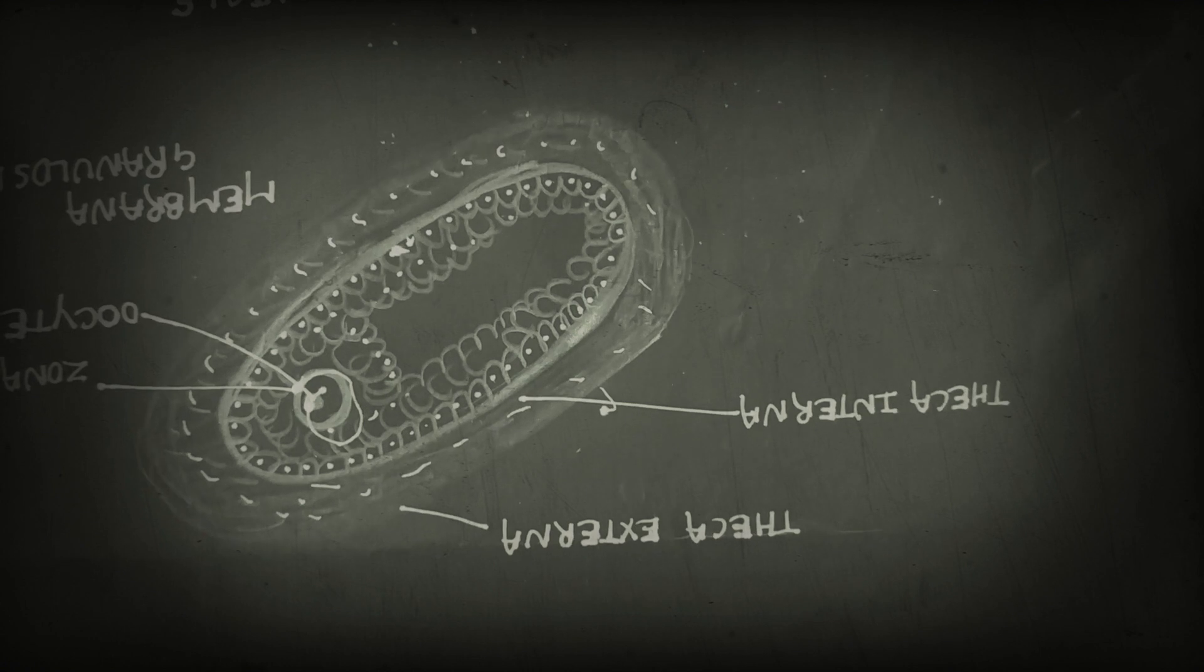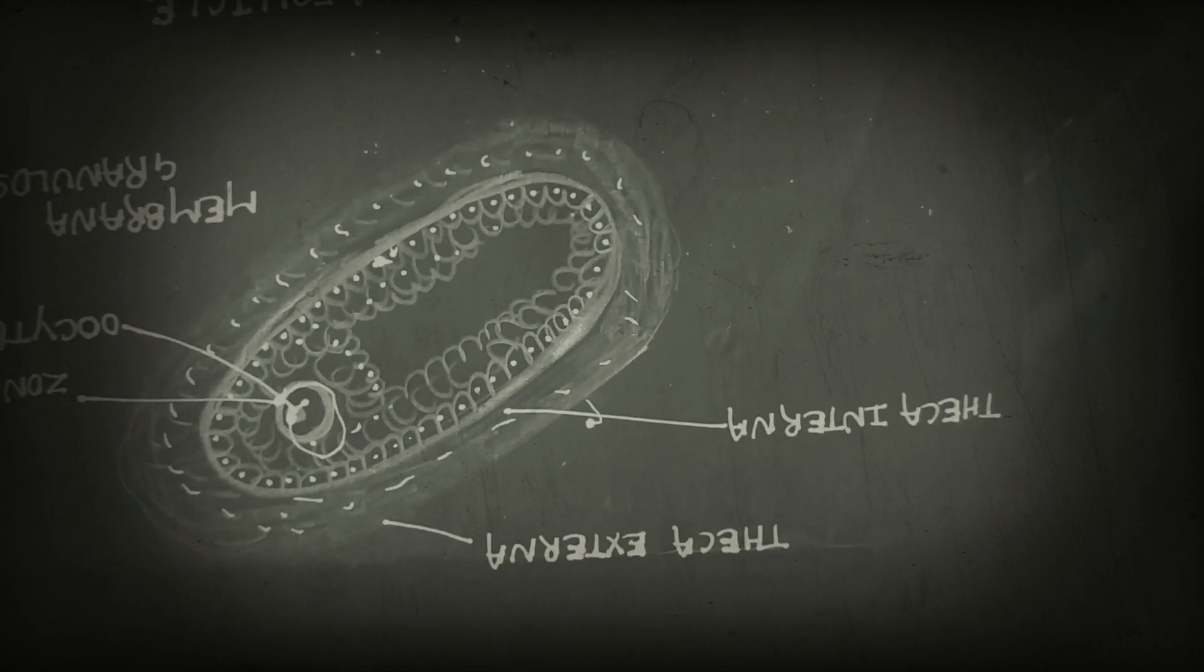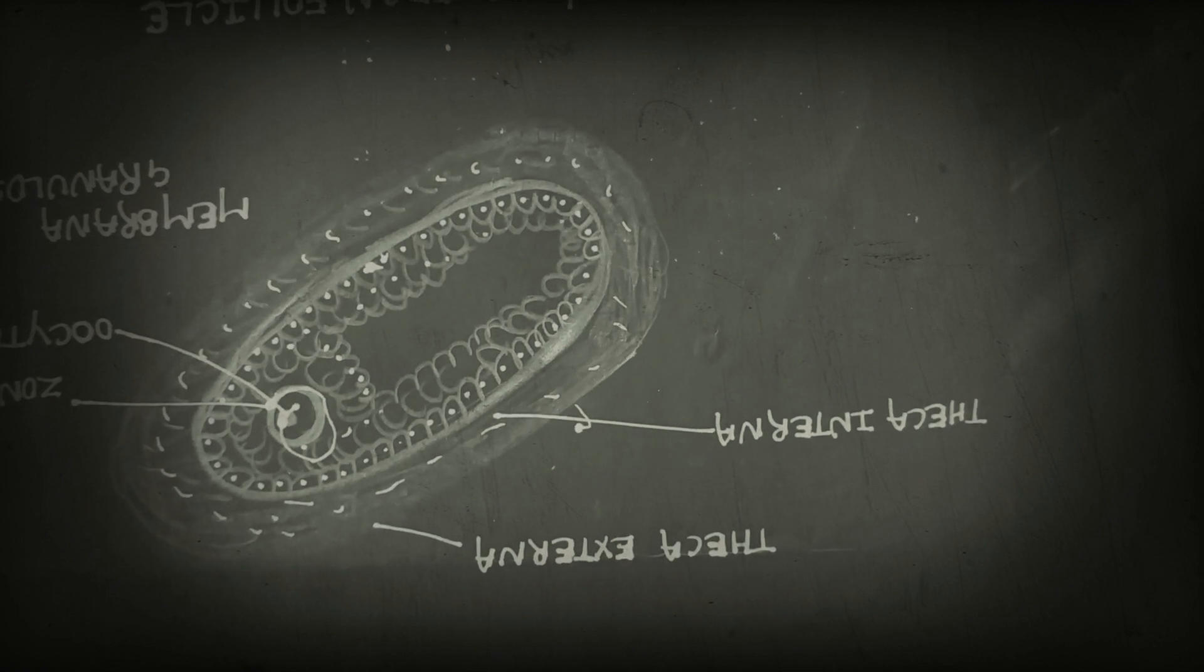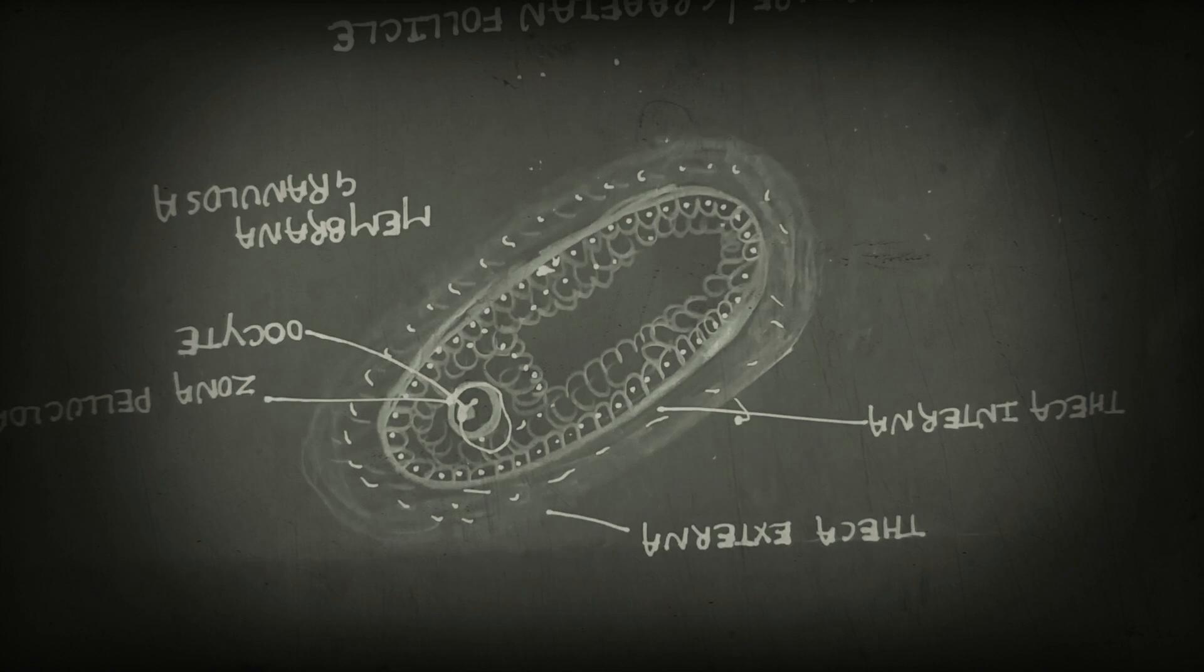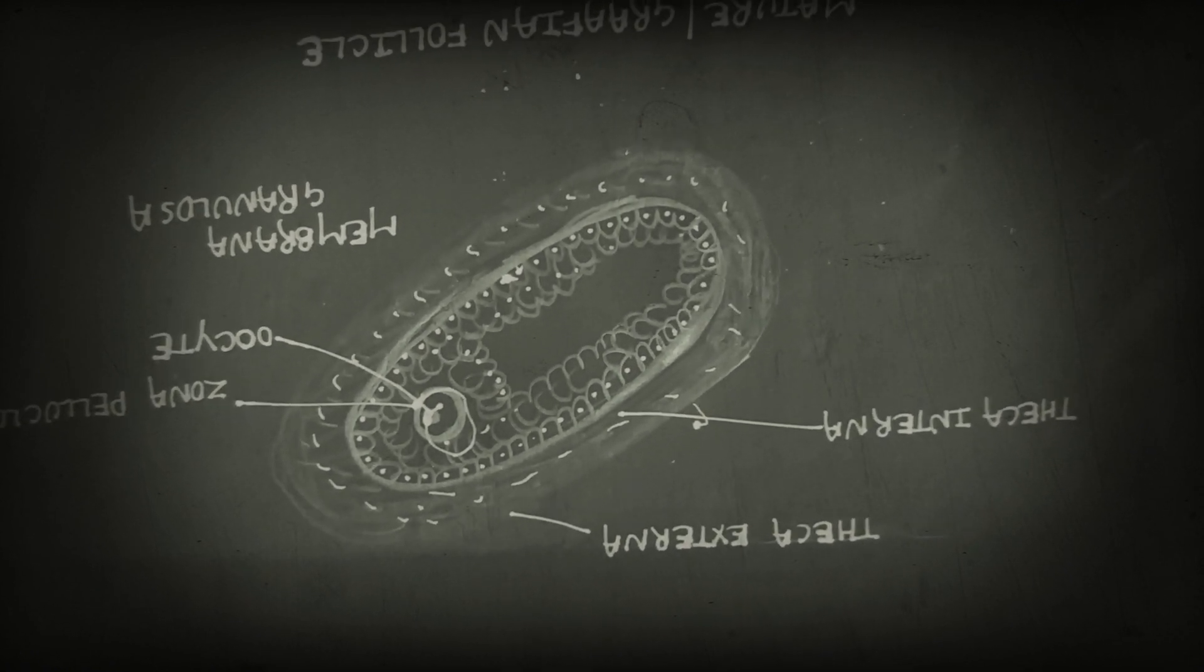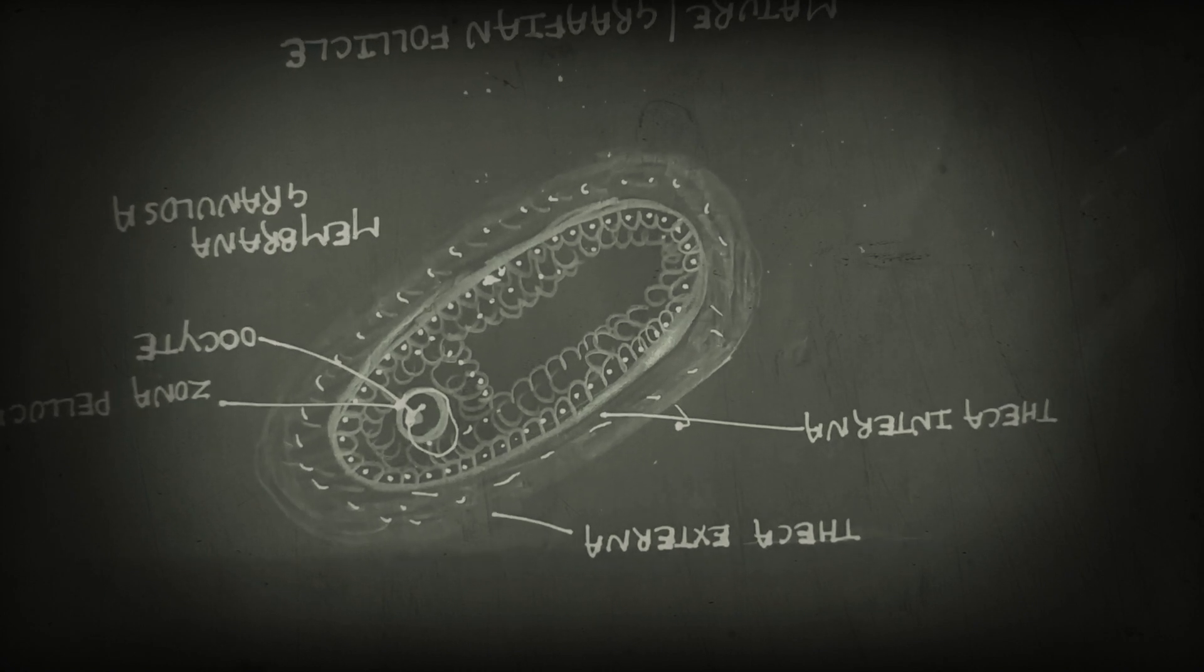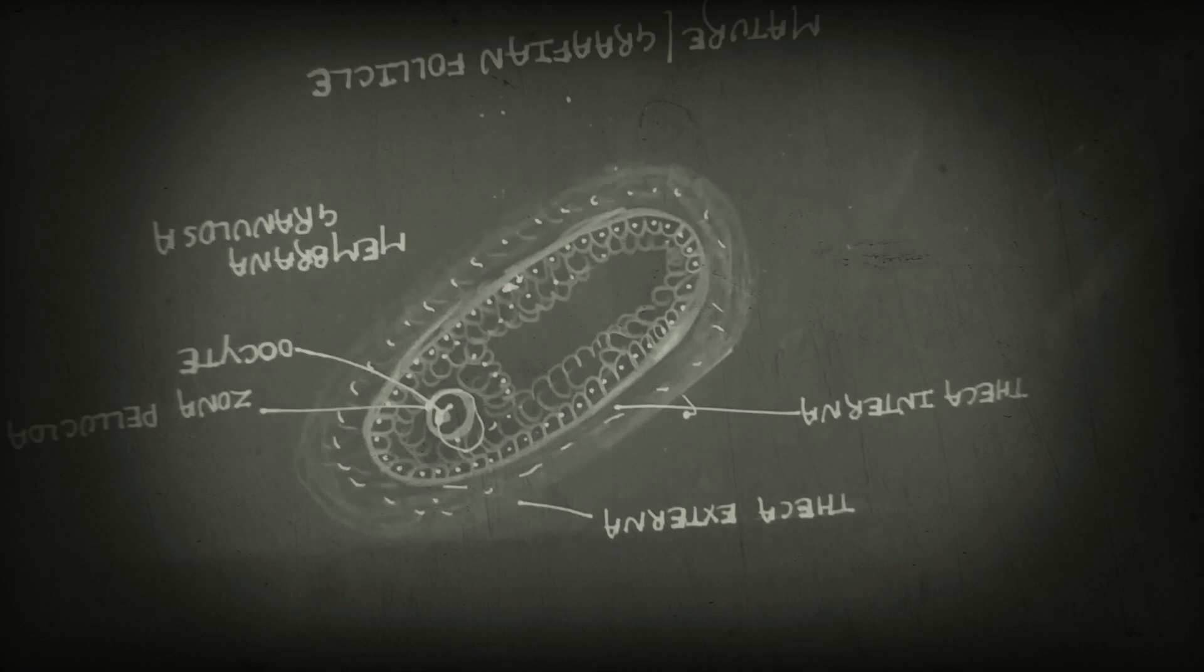Our mature follicles develop around the 7th day of the menstrual cycle in response to FSH (follicle stimulating hormone) and LH (luteinizing hormone). They grow to a size of 2-3 mm in the cortex, which covers our ovaries.